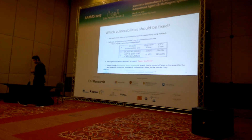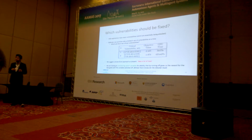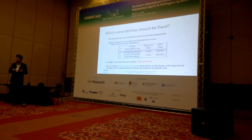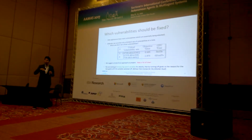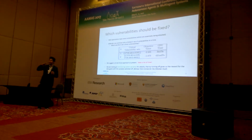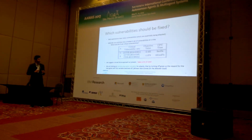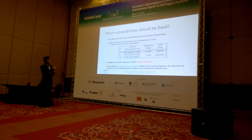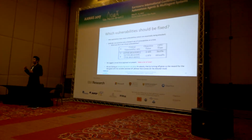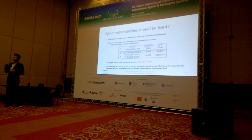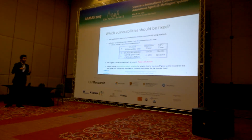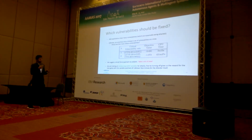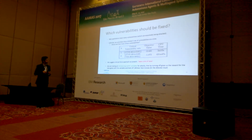We are considering introducing switch variables into the optimization — only K of which can be turned on — so that those attacks are excluded. However, using switch variables requires multiplying them with the attack probability variable, which introduces a bilinear non-convex term in the attacker dual. This remains an open problem.